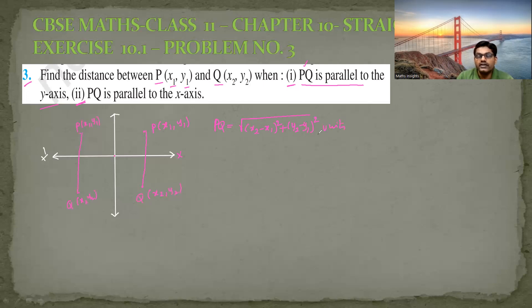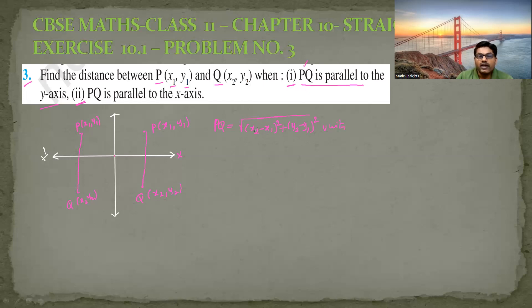You may take x1 minus x2 plus y1 minus y2 also — meaning difference of x-coordinates squared plus difference of y-coordinates squared — because since there is a square, it will become positive even if you subtract and get a negative value.